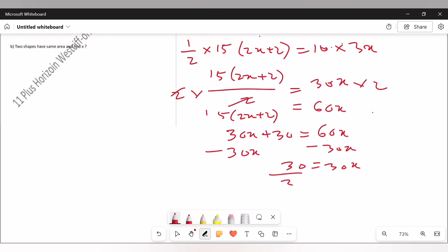Divide by 30 both sides, so it means the value of X equals 1.